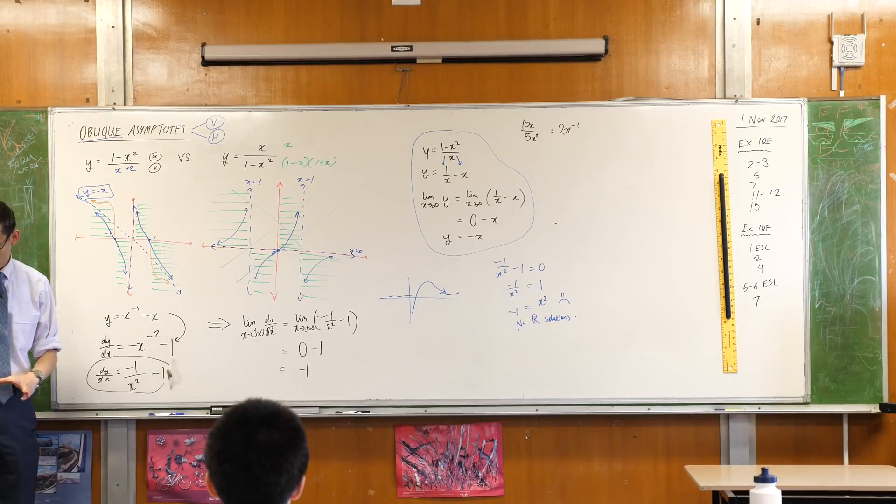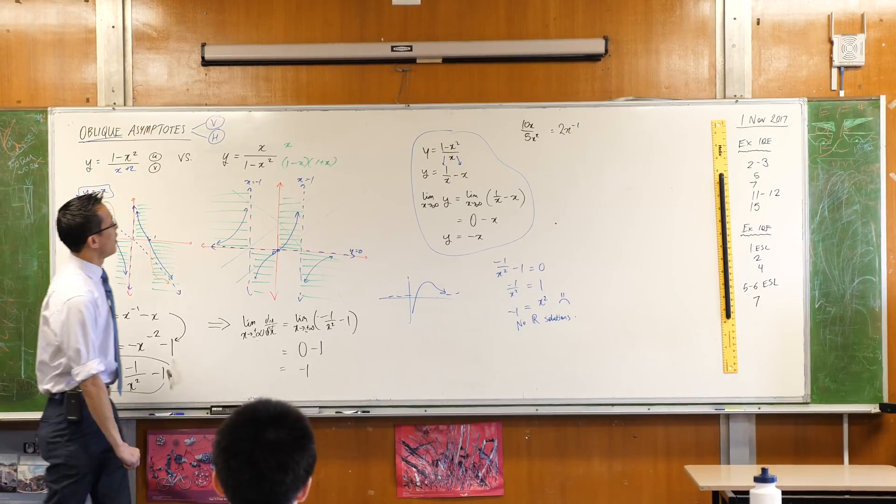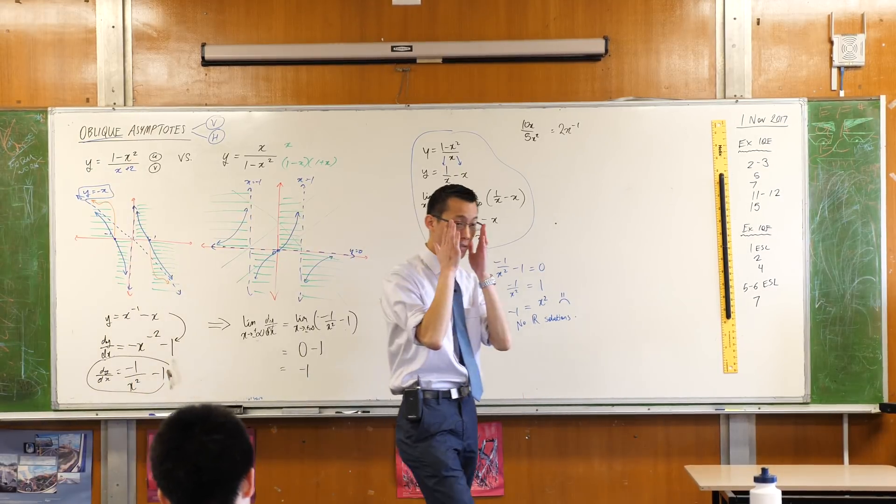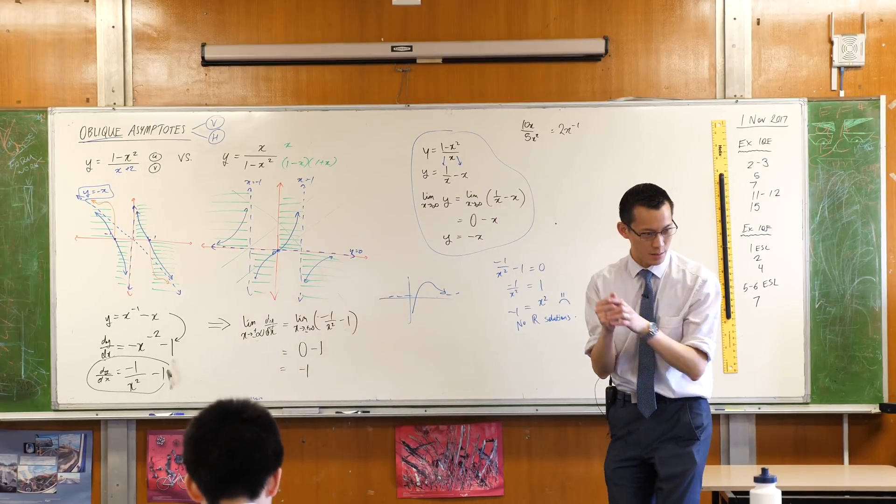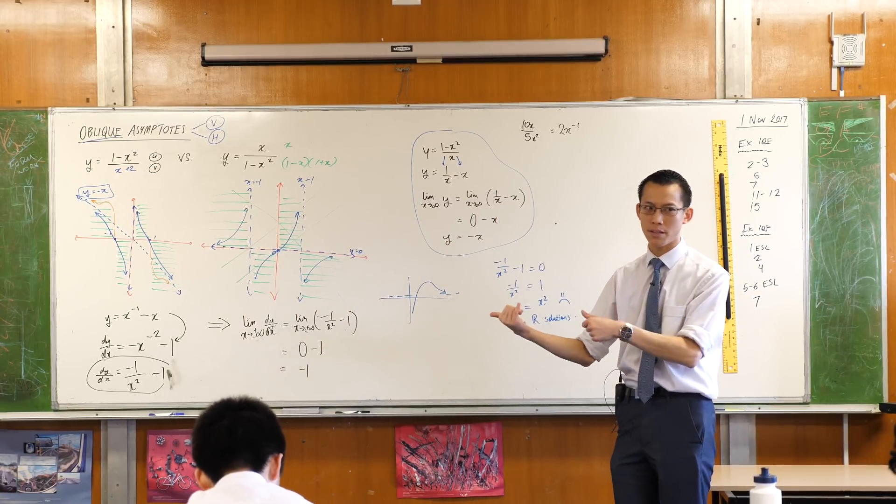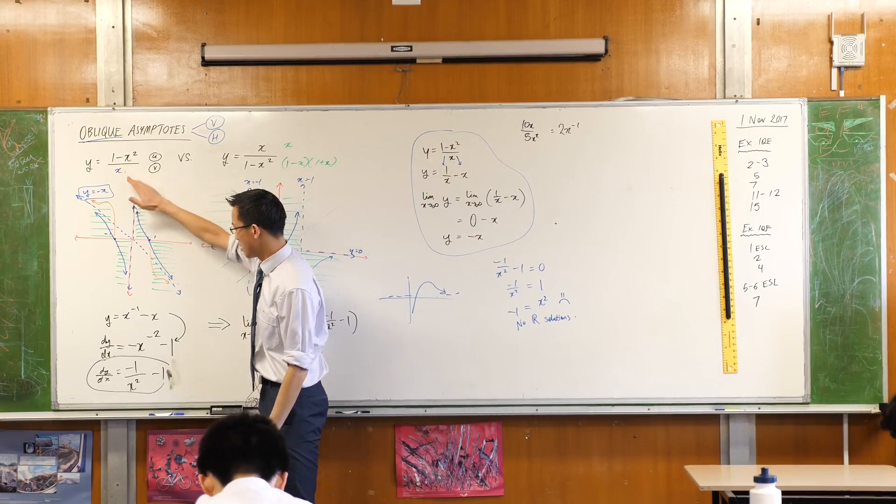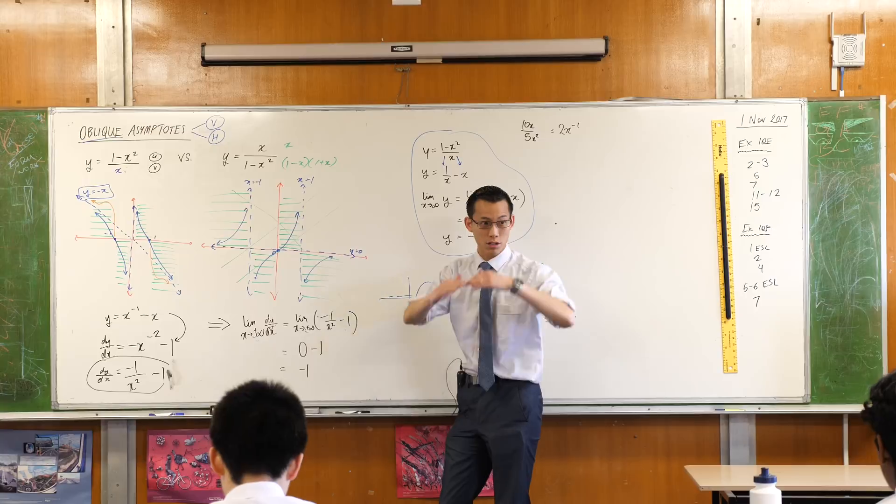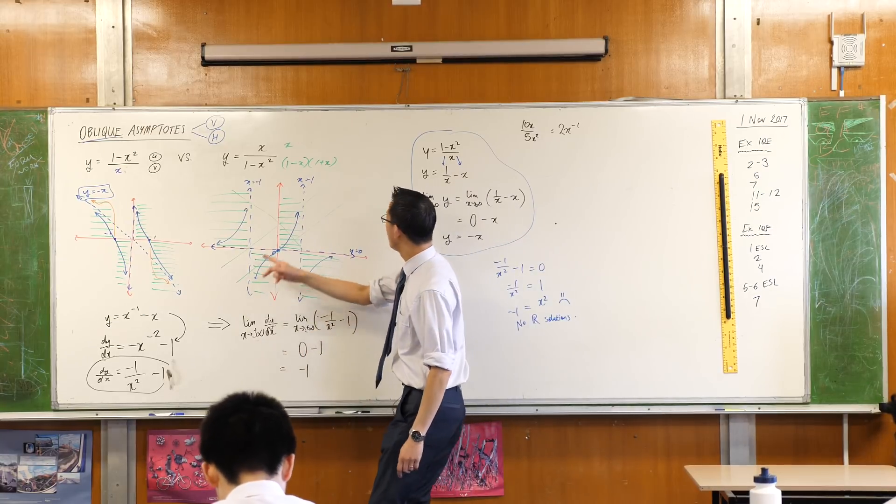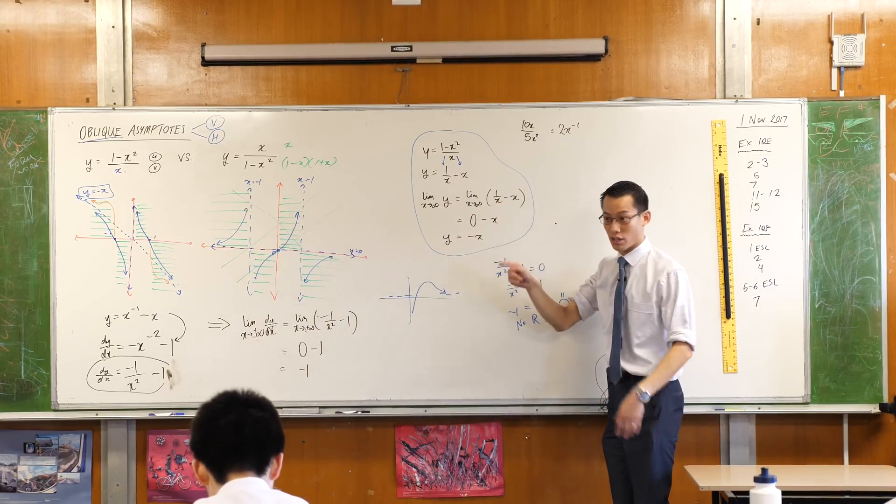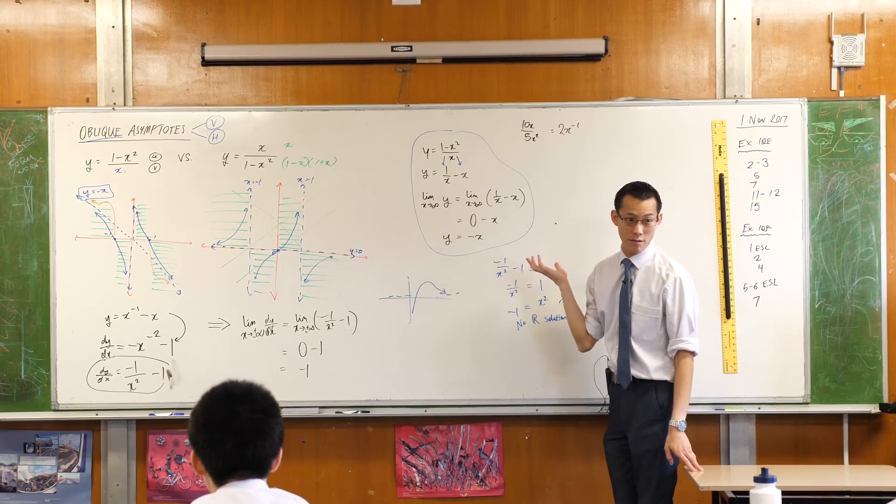In the exercises you've been given in Cambridge, they sneak in these oblique asymptotes every now and then, not frequently, but sometimes. And you will see it basically like this. You can use calculus to work out, okay, it's not just approaching zero, and you can use this kind of trick here usually. You can actually just divide through the whole thing, and you will get something at the other end.